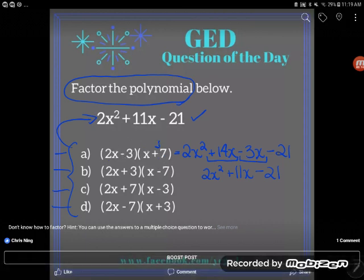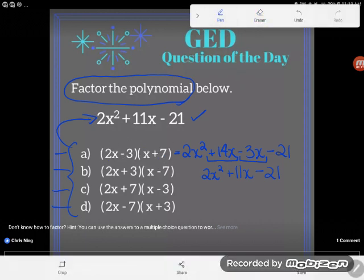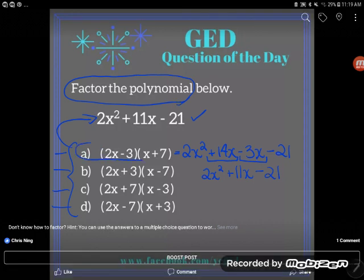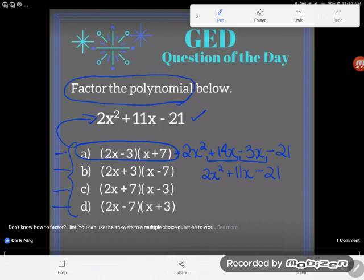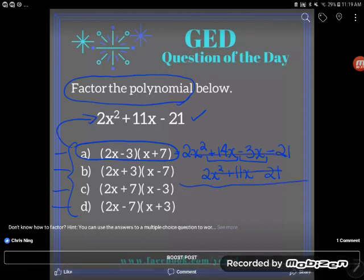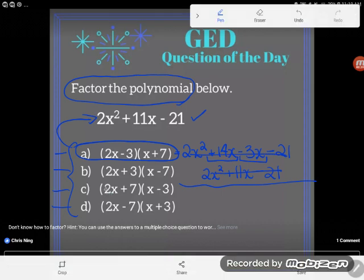Now if it were me y'all make mistakes with signs all the time. So if it were me I would just check one or two more just to make sure. Okay so let's try c. I'm going to go ahead and multiply through c and make sure it doesn't also give me the same thing.